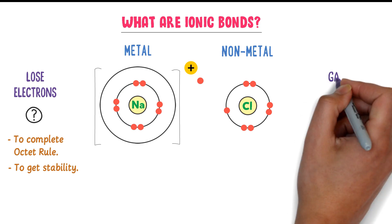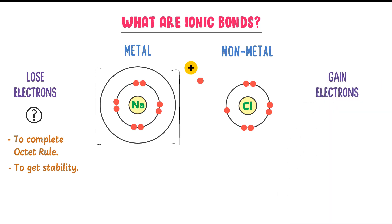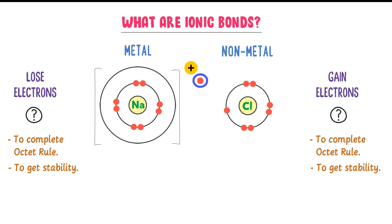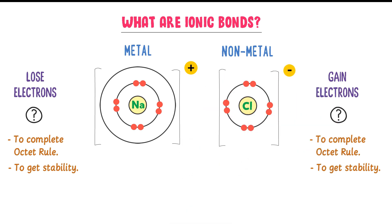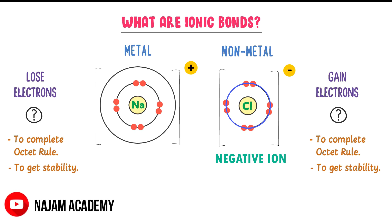On the other hand, we know that non-metals gain electrons. Non-metals gain electrons in order to complete their duplet or octet rule. For example, the electron lost by sodium is gained by the chlorine atom. After gaining this electron, a negative charge appears on the chlorine atom and it becomes a negative ion. There are 8 electrons present in the last shell of chlorine, so its octet rule is completed and it is now totally stable.